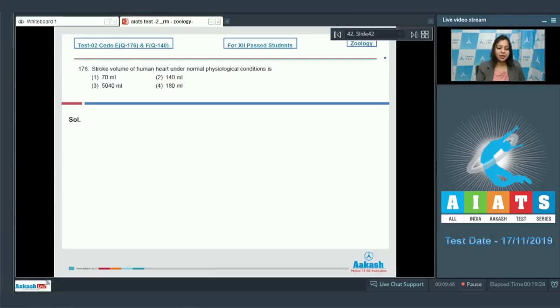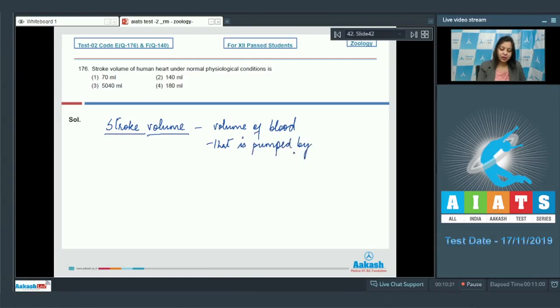Question number 176: Stroke volume of human heart under normal physiological conditions is the volume of blood that is pumped by each ventricle in one beat or one cardiac cycle. This stroke volume equals 70 ml. Stroke volume is the difference between the end diastolic volume and the end systolic volume.